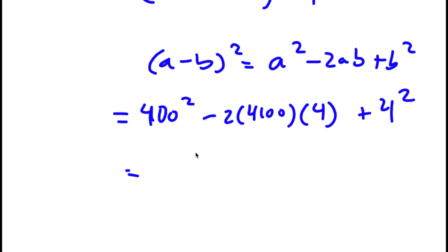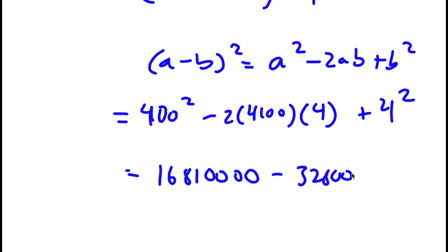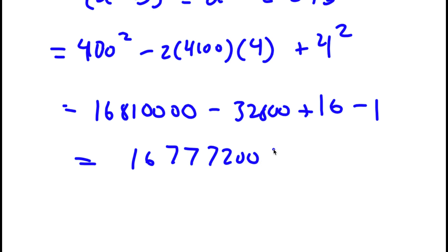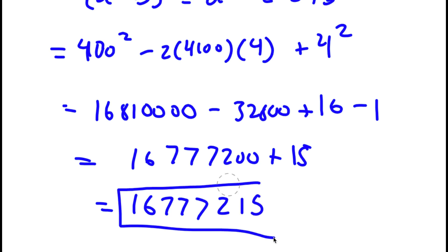Now, 4100 squared is 16,810,000, minus 32,800, plus 16, and then we can't forget our negative 1 at the end. So all of this is going to equal 16,777,200 plus 15, which is equal to 16,777,215. So this is my answer.